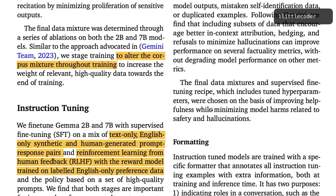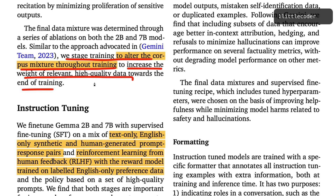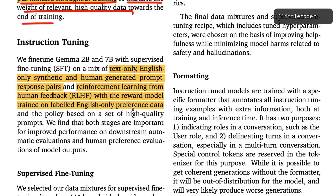One interesting detail in the paper is that they staged the training to alter the corpus mixture throughout the training process, increasing the weight of relevant high-quality data towards the end. This technique helps ensure the data isn't skewed and likely reduces overfitting. Google did something similar with Gemini — staging training to progressively emphasize high-quality data.